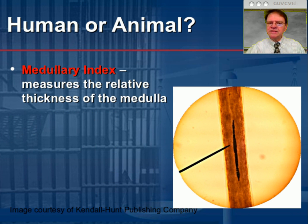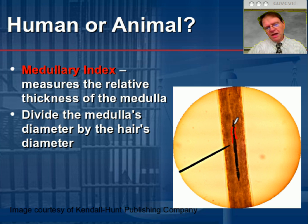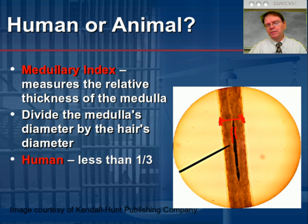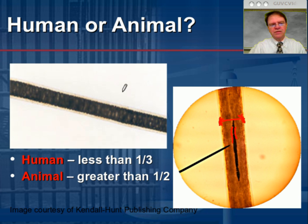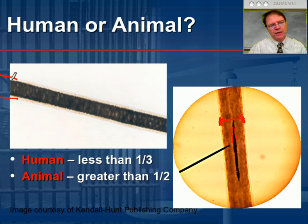We also want to look at something known as the medullary index — the relative thickness of the medulla. If we take the diameter of the medulla at its thickest point and divide that by the hair's total diameter, we get a ratio. As a general rule, the human medullary index is going to be less than one-third — 0.3 or lower. Animals are typically more than half. For example, in a dog's hair, the medulla is nearly all the way across the diameter of the shaft — so that is definitely not human.